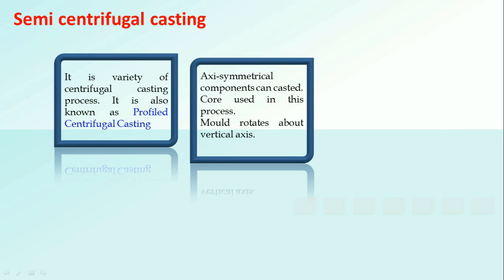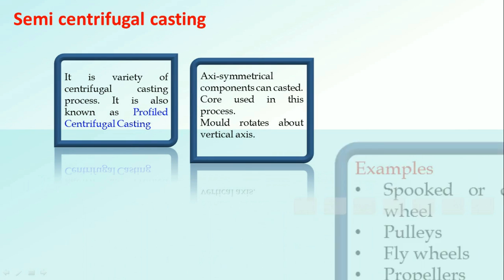The components which are axisymmetrical are produced by semi-centrifugal casting. The cavity is obtained by the help of cores and molds are rotated in a vertical direction.